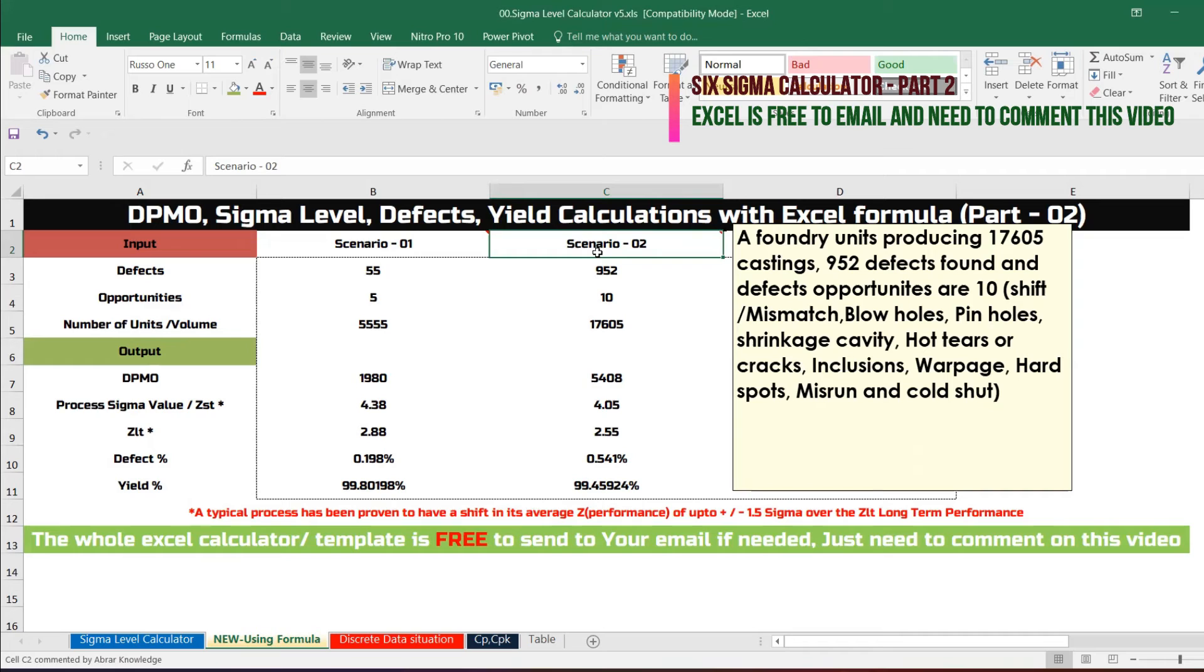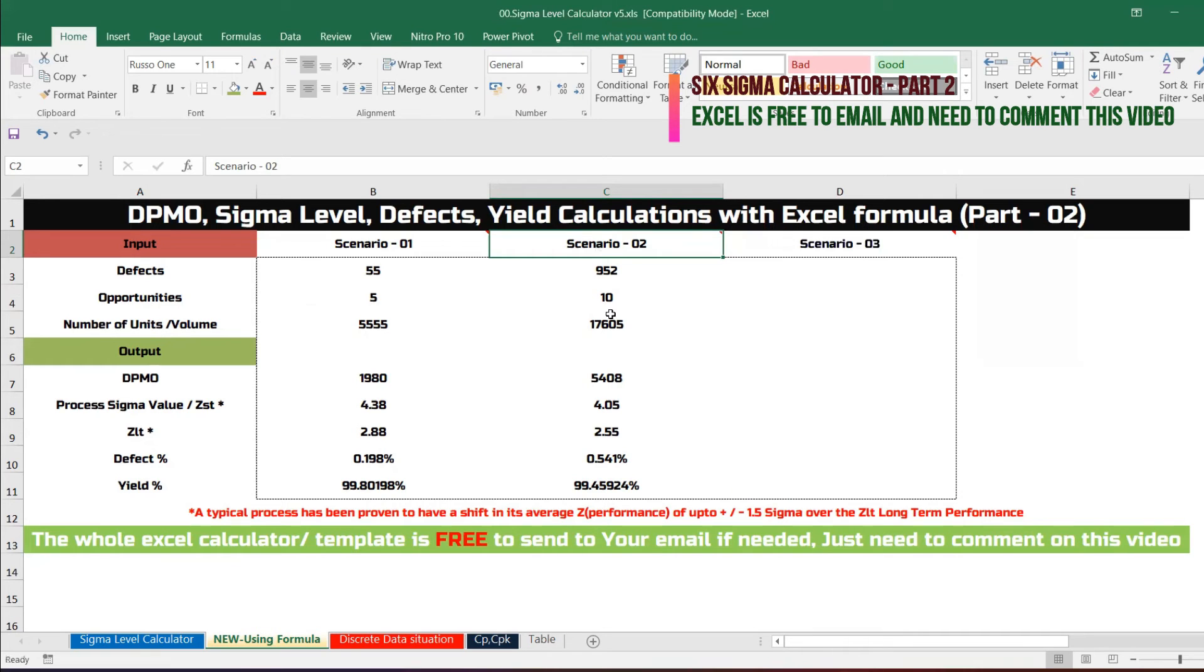952 are the defects and we have 10 opportunities and number of units is 17,605. It will get calculated automatically. I'm just copy pasting this formula so that the same formula will be applied everywhere.